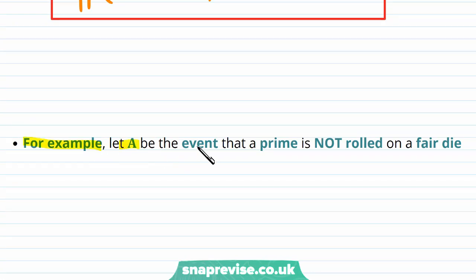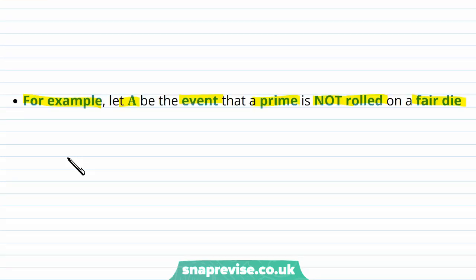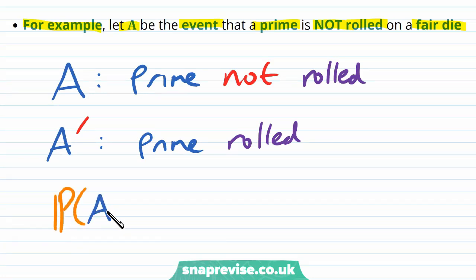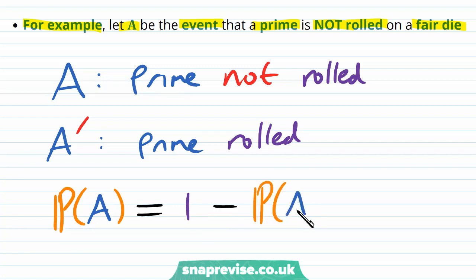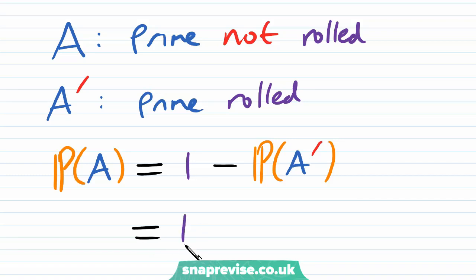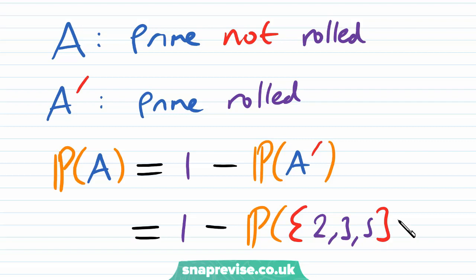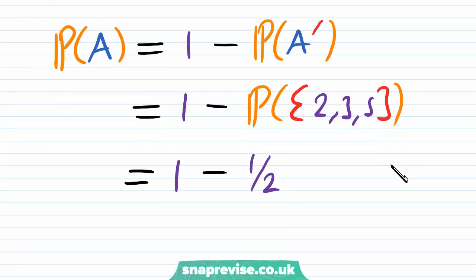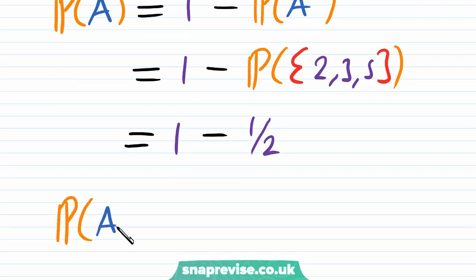For example, let A be the event that a prime is not rolled on a fair die. Then the complement of A is the event that a prime is rolled. Using the formula, the probability of A equals one minus the probability of A complement, which is one minus the probability of getting a two, three, or five. The only primes on a fair die are 2, 3, and 5, so using equally likely outcomes this is one minus one-half, giving the probability of A equals one-half.